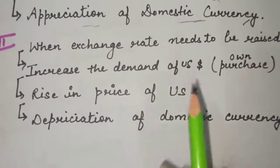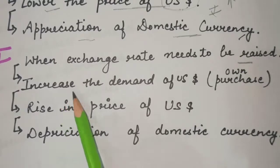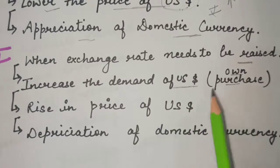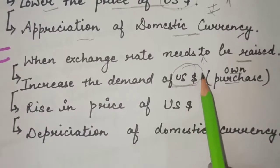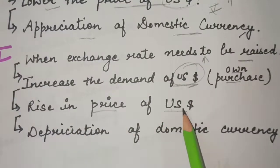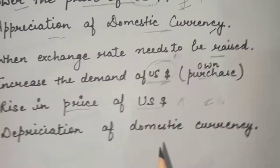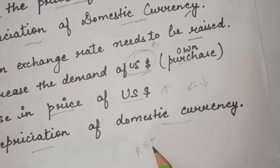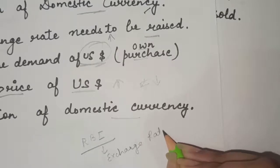When exchange rate needs to be raised, the central bank will increase the demand for US dollars by its own purchase. The central bank will purchase the foreign currency itself, and the demand for US dollars will increase. If there is an increase in demand for US dollars, there will be a rise in the price of US dollars, which means the price of the domestic currency, rupees, will decrease — there would be depreciation of domestic currency. This is how the RBI controls the foreign exchange rate.